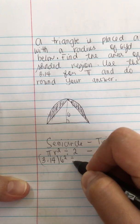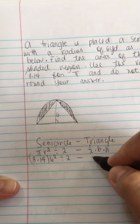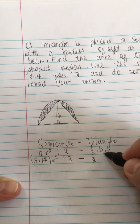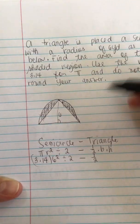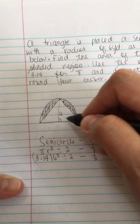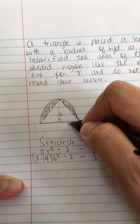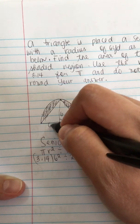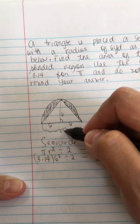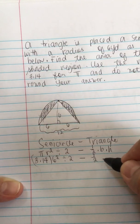We divide it by 2 minus the area of the triangle, which is one half times base times height. If the radius is 6, this is also 6 and this is also 6 for a total of 12. So the base is 12 and the height is 6.